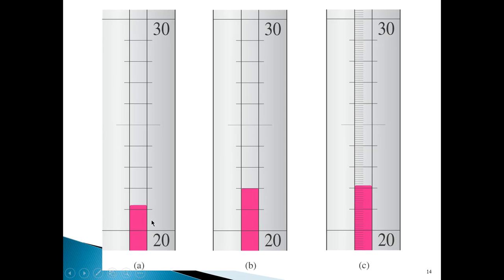Let's concentrate on the first thermometer to the left. You'll notice the scale has a 20 here and a 30 up here, with 10 equal divisions. The mercury level is slightly above the first marking from the 20 — so this is 20, 21, 22 — the mercury level is just above 21. So the first thing we can conclude is that this mercury is representing a temperature of 21 point something. We are certain about the 2 and the 1 in 21, but to figure out what digit follows after the decimal point, we have to make an estimation — we have no choice.